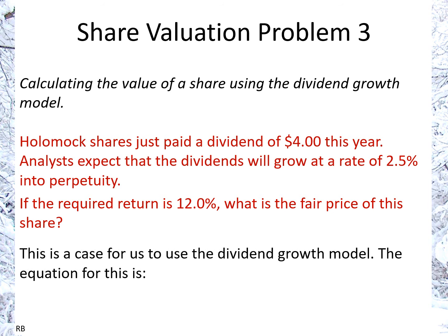Here we're going to be using the Dividend Growth Model. The equation for this is P0 equals D1 over R minus G. I always recommend we keep in mind the subscripts — in this case P0 and D1 — because we'll need it for this question, and it's also good to keep in mind when you have non-constant growth for the initial period.